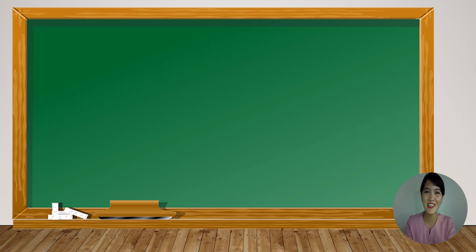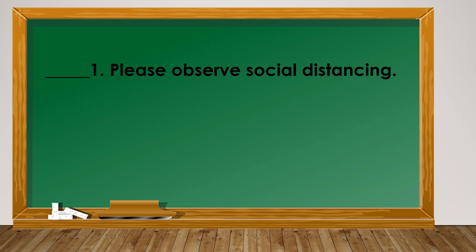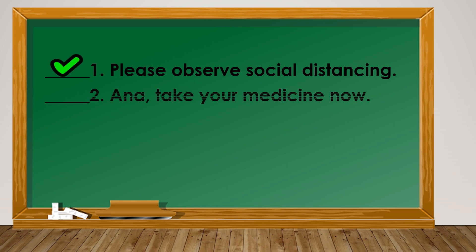Grade 3 learners, did you understand our lesson? Can you use imperative and exclamatory sentences in a dialogue? That's great! Let us now start our first activity. Directions: Put a check mark on the line before the number if the sentence is imperative, and an X mark if it is exclamatory. Number 1: 'Please observe social distancing.' The correct answer is check. Number 2: 'Anna, take your medicine now.' The correct answer is check.